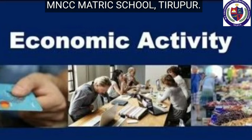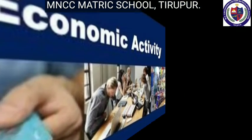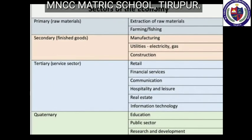Next topic: Economic Activities. Economic activities are those efforts or actions that involve production, distribution, and consumption of commodities and services at all levels within a region. Types of economic activities: primary, secondary, tertiary, quaternary, and quinary activities. Primary activities pertain to the extraction of raw materials from the earth's surface - for example, food gathering, hunting, and lumbering.